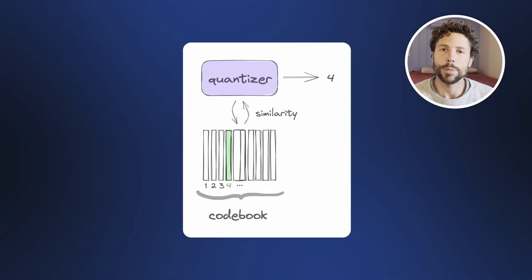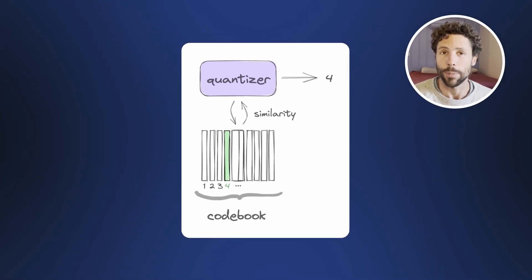Instead of transmitting the original high-dimensional vectors, we can just send a single integer number — the index of the closest matching vector in the codebook. But here's the catch: this strategy works well in theory, but in practice we have a problem as we want to increase the bitrate. At a very low bitrate like 1kbps this approach can work fine, but as the bitrate goes up, say to 3kbps, and the encoder is producing 100 vectors per second, we would need a giant codebook with more than a billion unique vectors. That's just infeasible in practice — this is where traditional vector quantization hits a wall, and where residual vector quantization comes in.